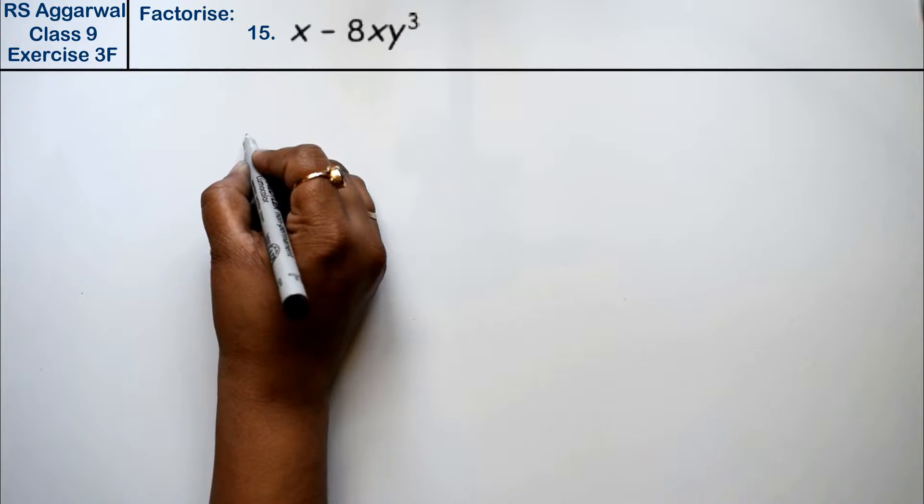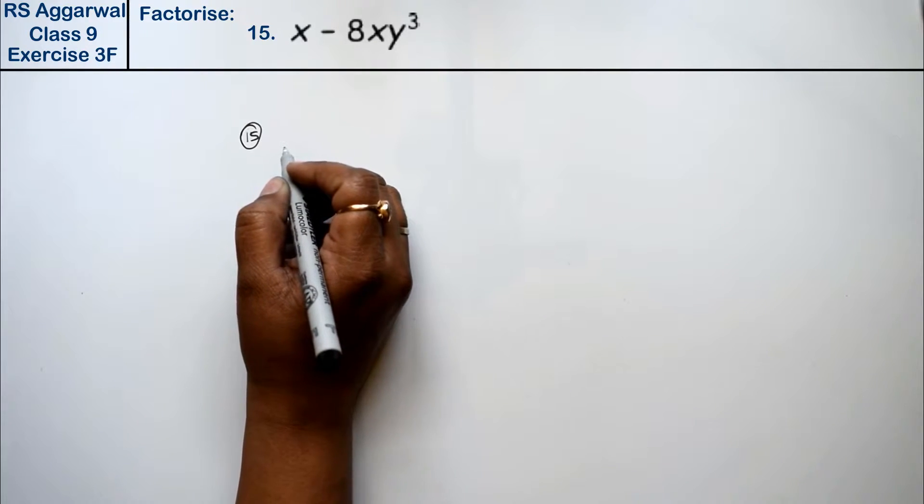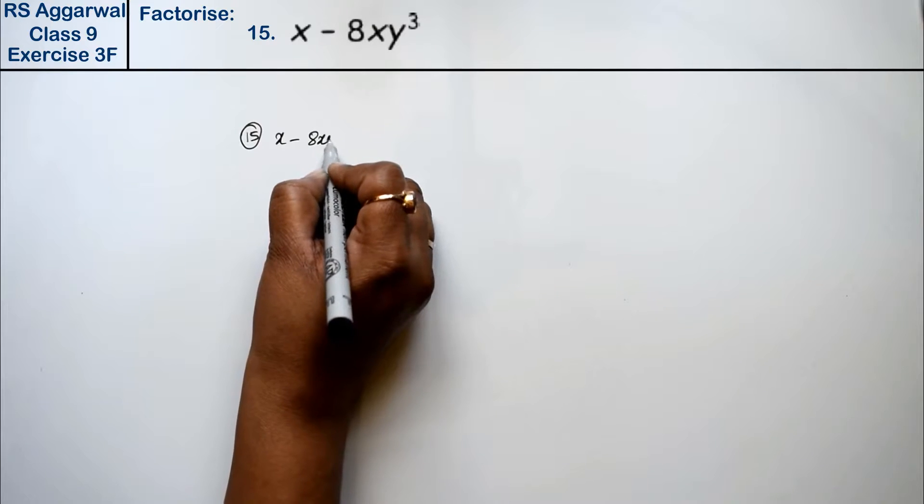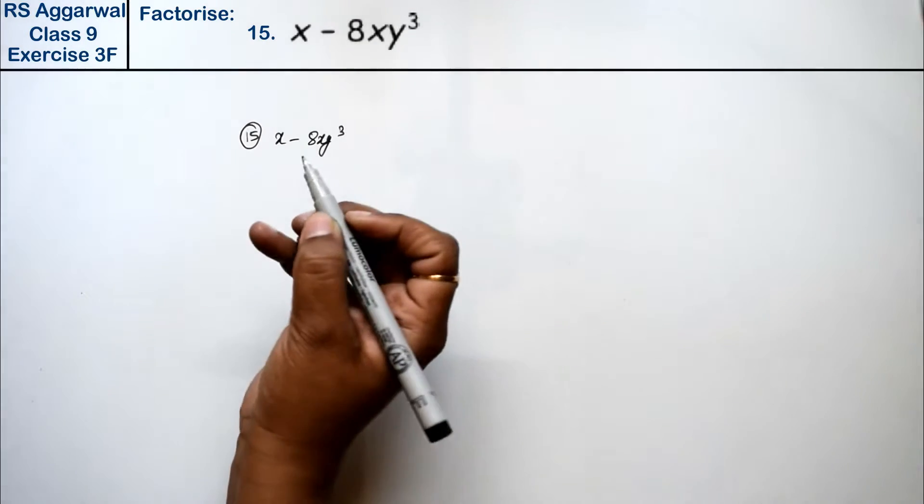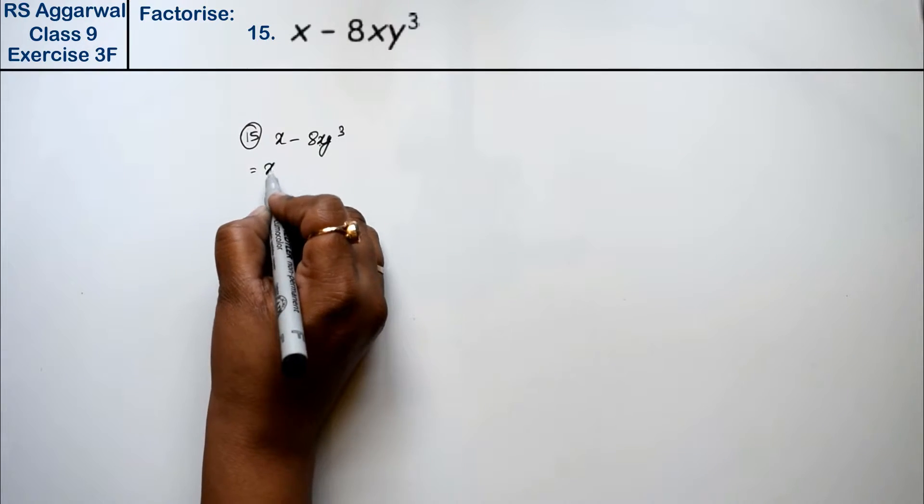Let's do question number 15 of exercise 3F, that is factorization of polynomial. Question number 15 is x minus 8xy cube. So x's cube is not going to happen, so x is common in both of us.